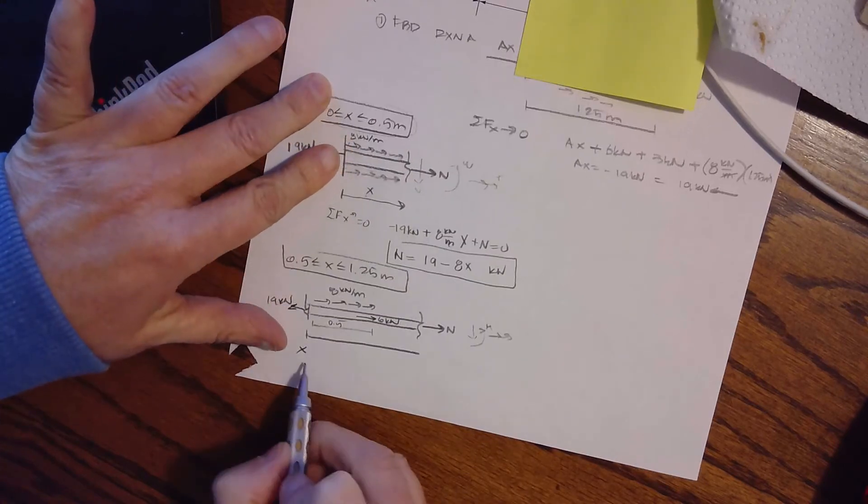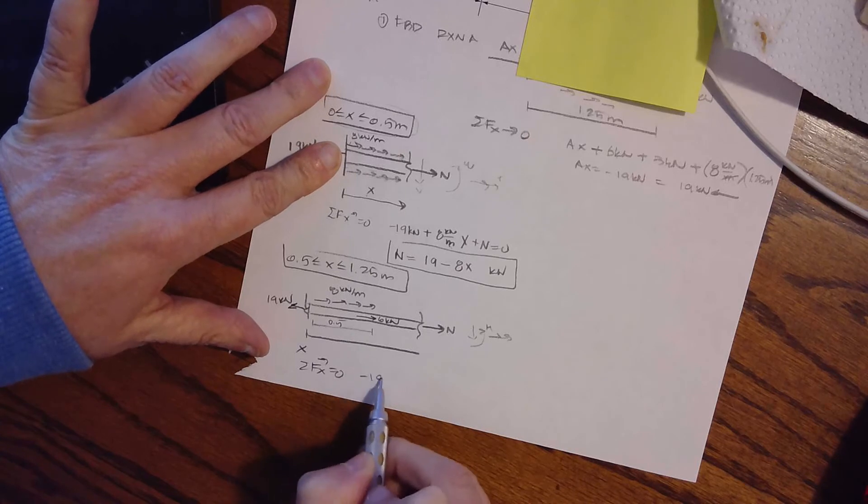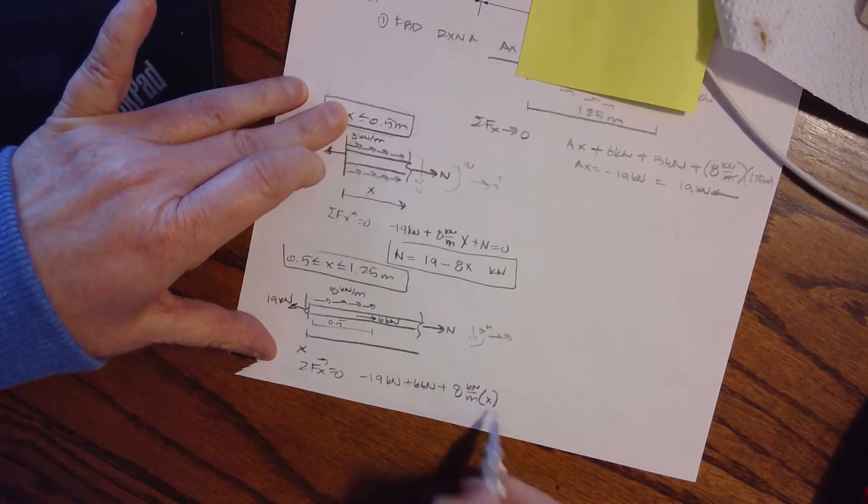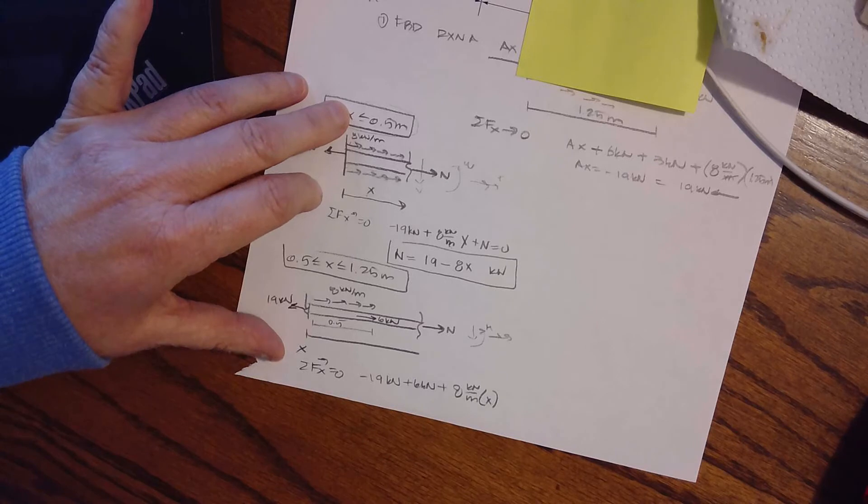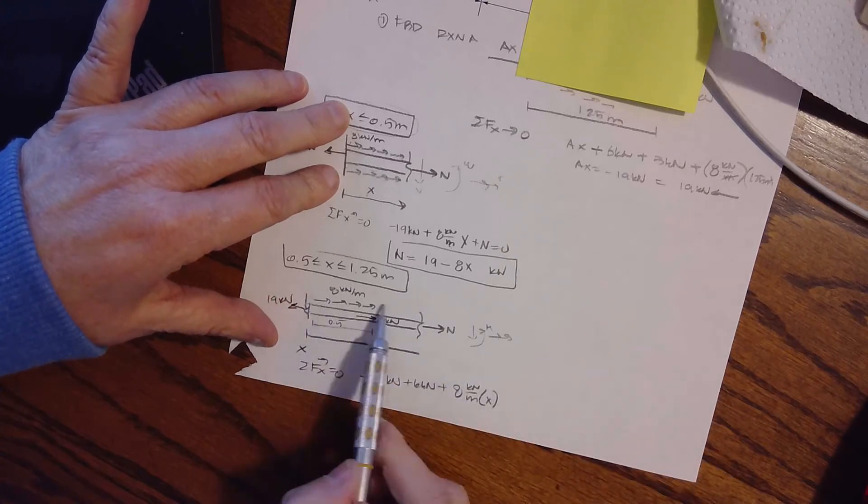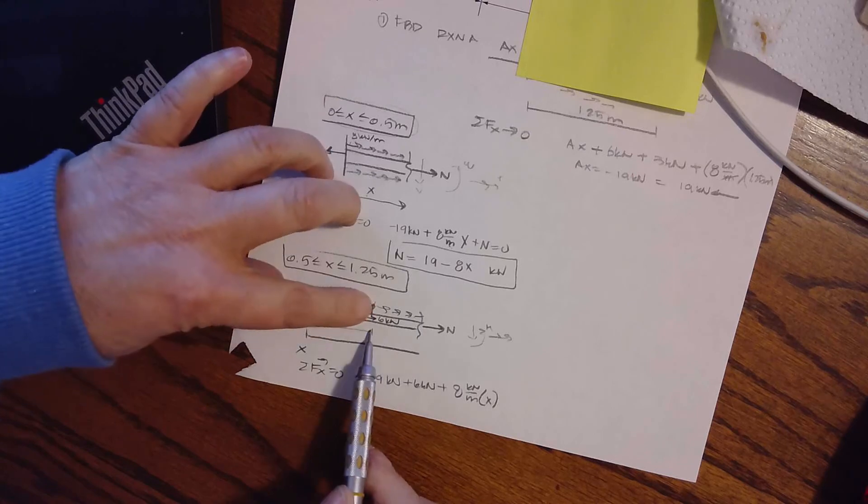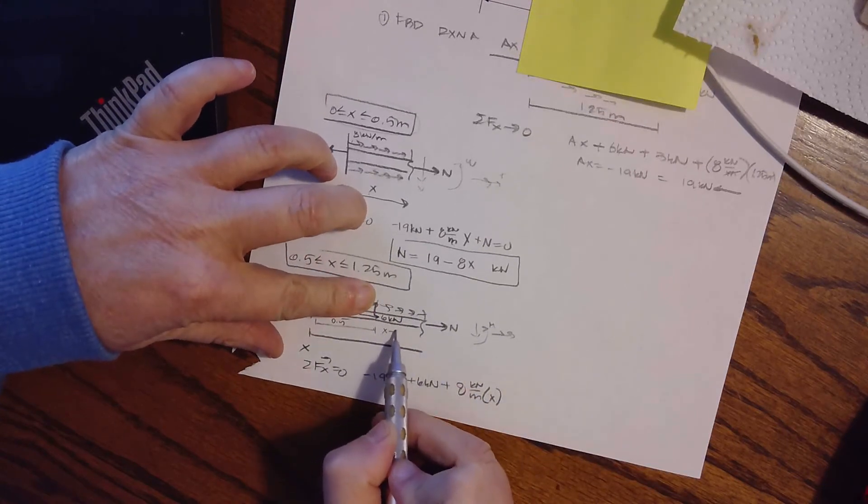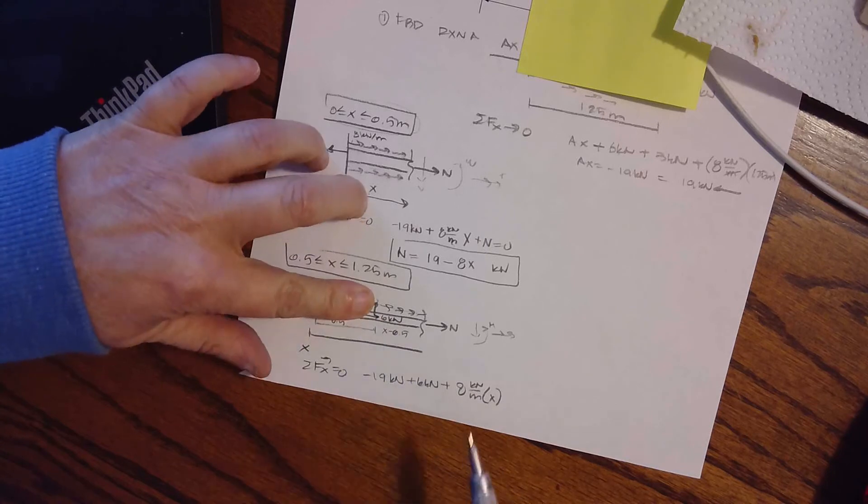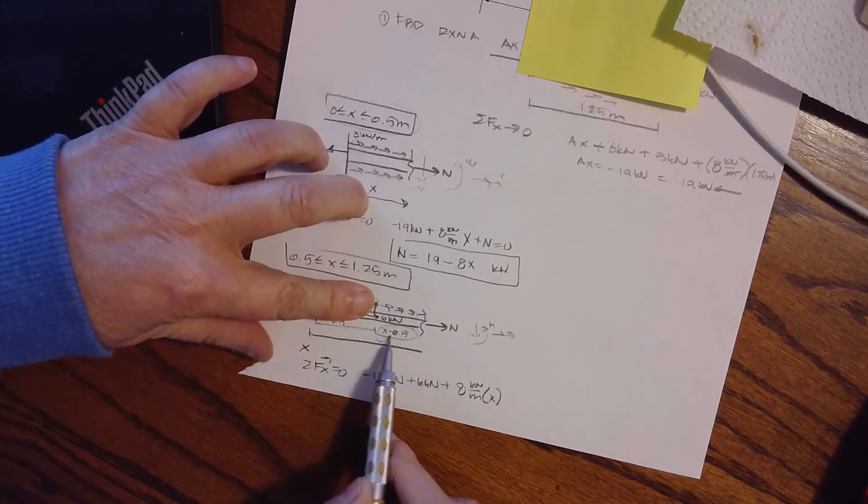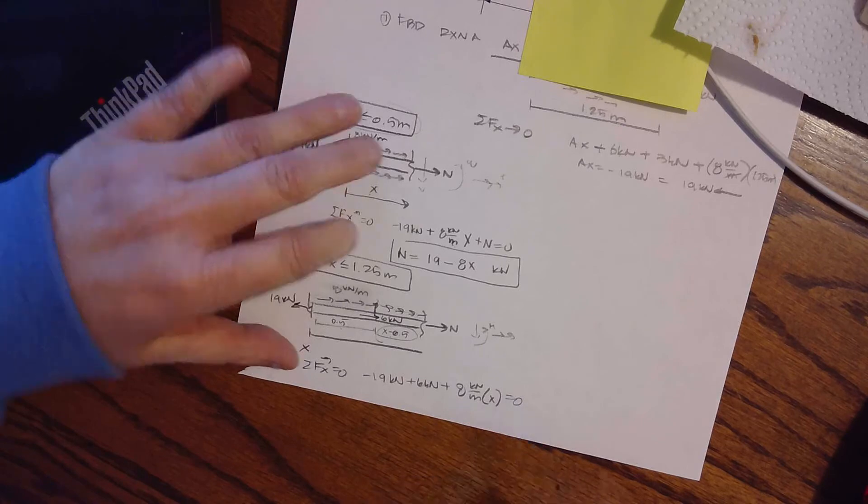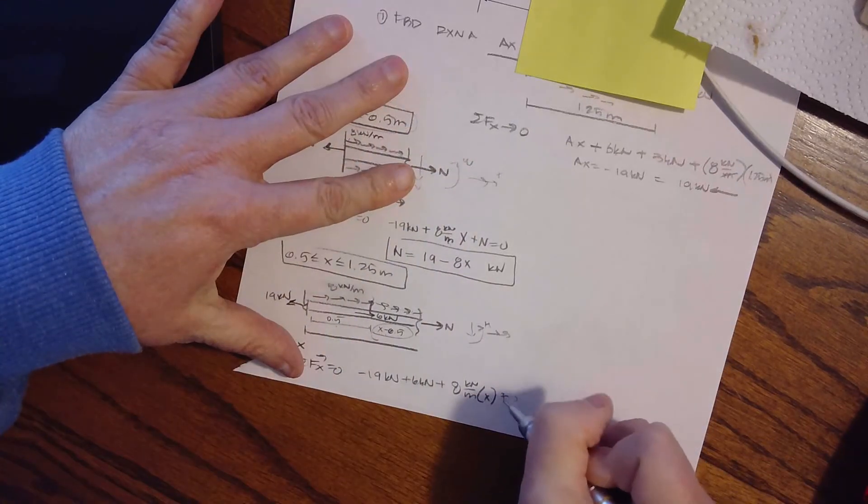So how do I get an equation? Summing forces in the X direction equals zero. Negative 19 kilonewtons plus 6 kilonewtons plus 8 kilonewtons per meter times X. And is that all that I have? Absolutely. And it's times X because it actually goes all the way down the length. If it only went down part of the length, then we would have to call this X minus 0.5, just like we would with shear. If this uniform load was being applied starting there, then the length would be X minus 0.5. But it's starting all the way back. Equals zero. Oh, plus normal force. I got so excited there. Plus N equals zero.